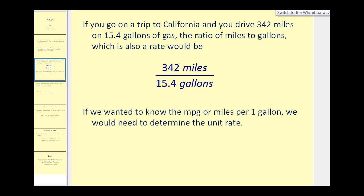If you go on a trip to California and you drive 342 miles on 15.4 gallons of gas, the ratio of miles to gallons — which is a rate — would be written as 342 miles to 15.4 gallons, or often we just say 342 miles per 15.4 gallons.